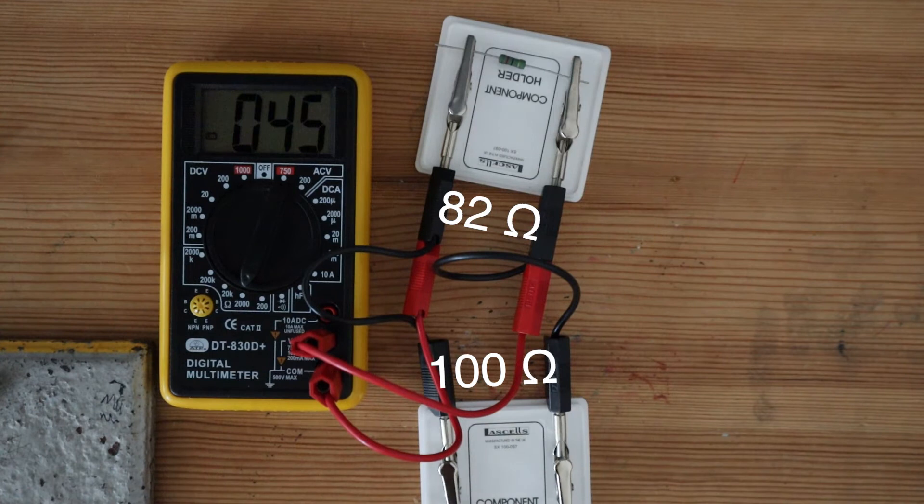If you are studying for GCSE physics, this is all you need to know about resistors in parallel. But if you're an A-level student, you will need to know the equation for calculating total resistance of resistors in parallel. The equation goes like this.